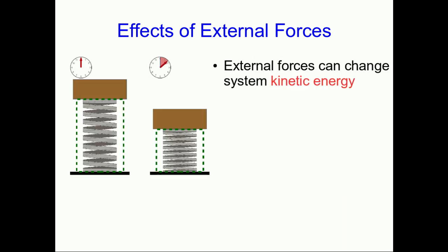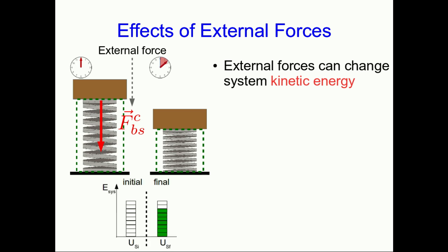Here's another example. Let's think about a spring being compressed by a brick placed on top of it, and our system is just the spring. The brick is exerting a force on the spring — that's an external force because the brick isn't in our system — and we can see that our system is gaining spring potential energy.